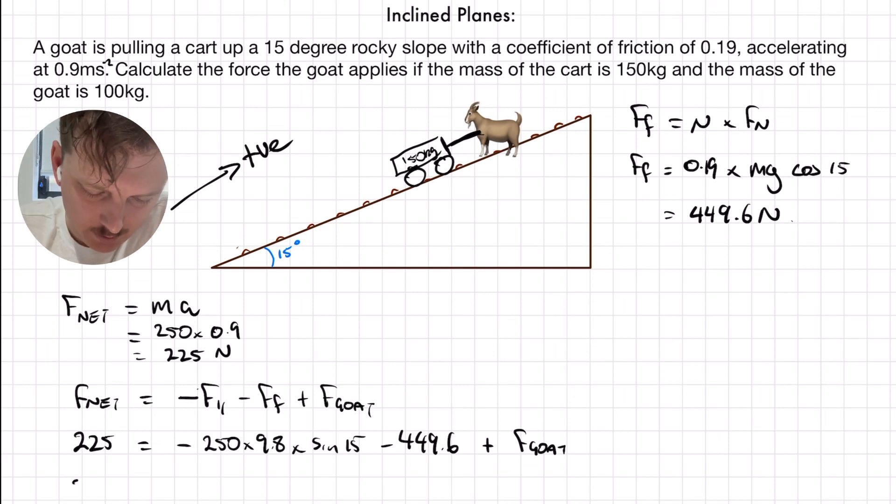Okay, I can add both of these to the other side and find that my force for the goat is equal to 225 plus 634 plus 449.6 which is 1308.7 newtons and so with significant figures, I'm going to go to 2 here, to about 1300 newtons.